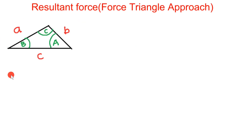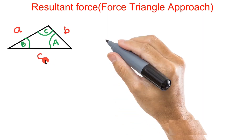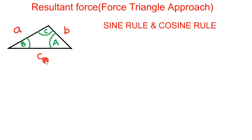Let's say I have this triangle here, which has sides a, b, and c. The angles opposite to these various sides are given in this triangle: angle A is the angle opposite to side a, angle B is the angle opposite to side b, and angle C is the angle opposite to side c. If you want to find any of the sides or angles of this triangle, we can use the sine rule or the cosine rule.